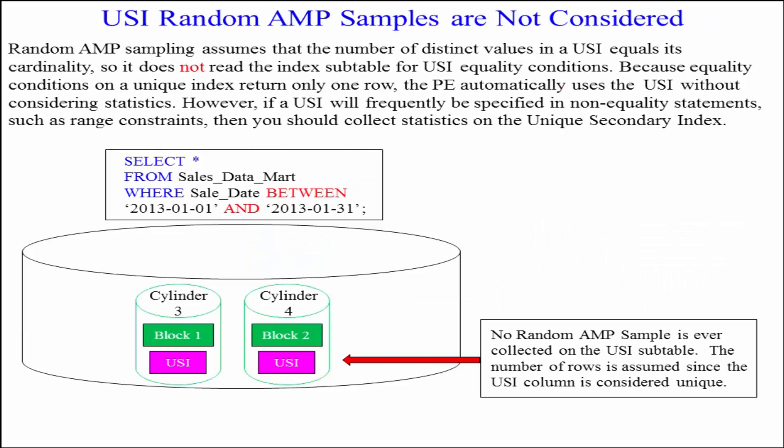Unique secondary indexed random amp samples are not considered. No random amp sample is ever collected on the NUSI subtable. The number of rows is assumed since the NUSI column is considered unique.